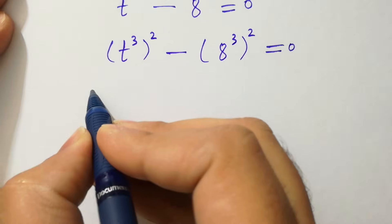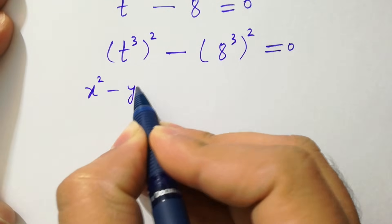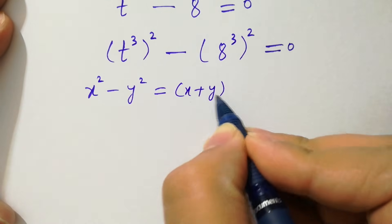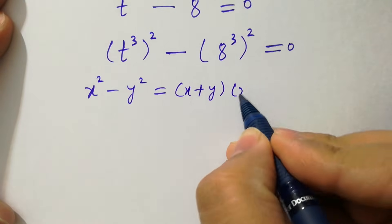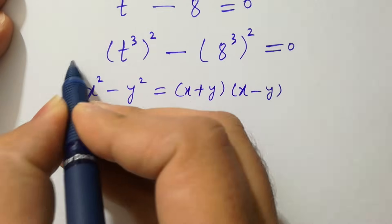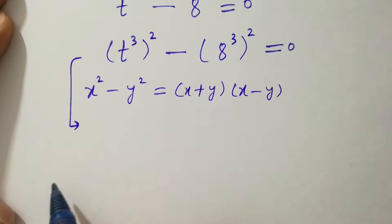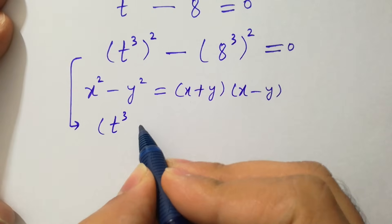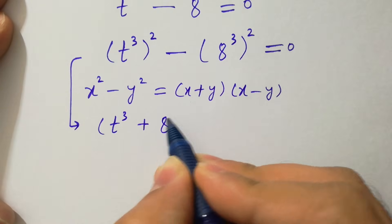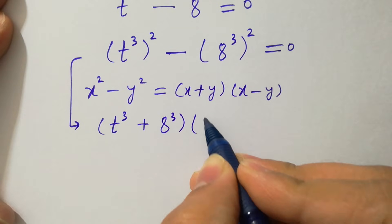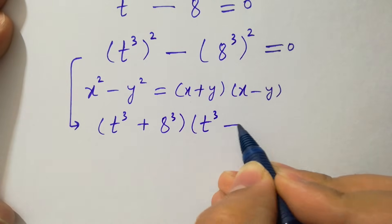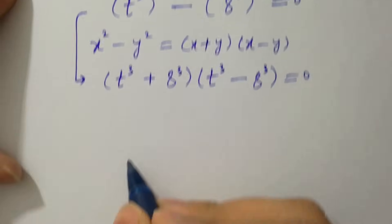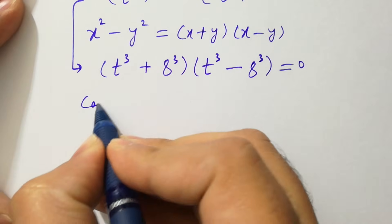By this we know the formula of x² minus y², which equals (x + y)(x − y). Applying this formula we have (t³ + 8³)(t³ − 8³) equals 0.